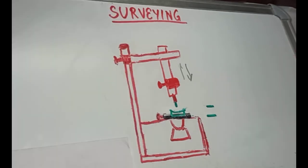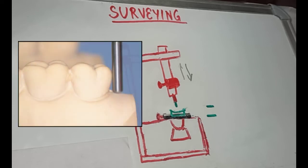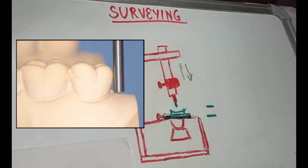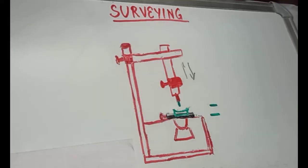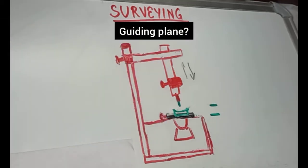With this, we examine the proximal surfaces of the abutment teeth for potential guiding planes. This will give us an idea about the degree to which the area might need modification to achieve parallelism. Now, you all must be wondering what is this guiding plane.